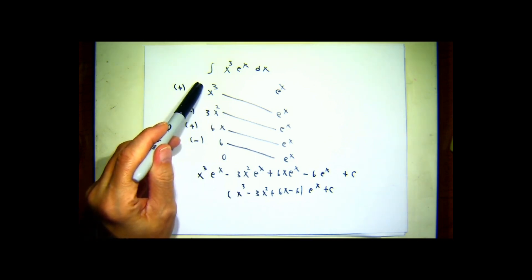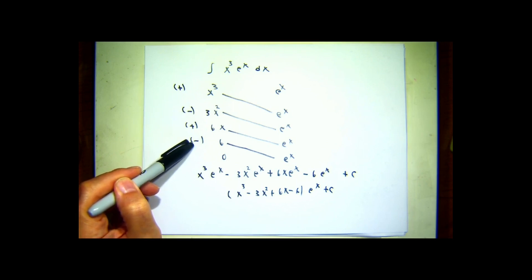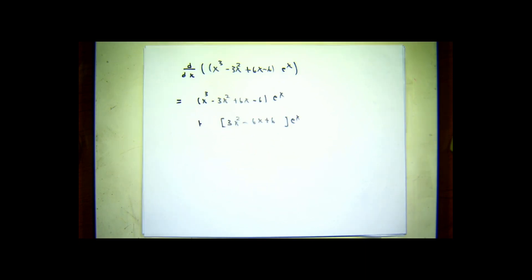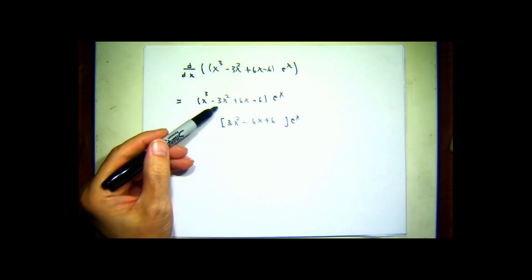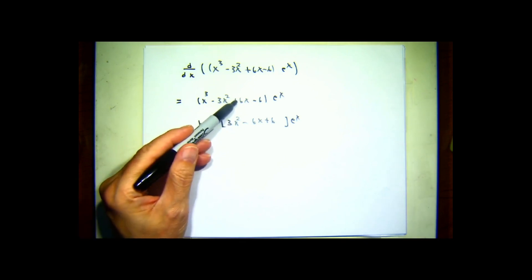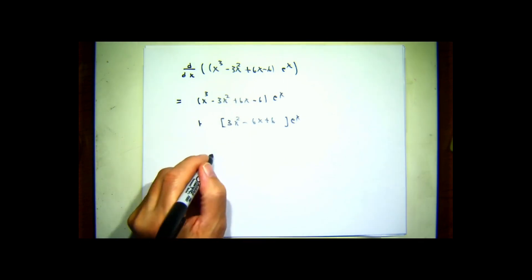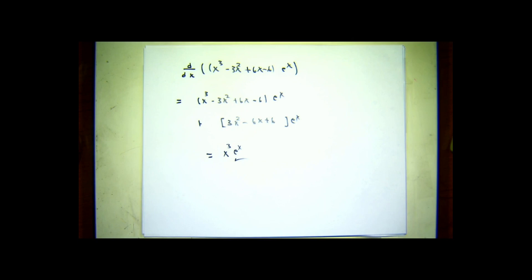x cubed e to the x, minus 3x squared e to the x, plus 6x e to the x, minus 6 e to the x, plus a constant. In the terms that are not constants, I can factor out e to the x. Allegedly, the derivative of this is x cubed e to the x. Doing the product rule, notice that there's an e to the x in both pieces, so I can think of factoring that out. Minus 3x squared plus 3x squared cancels out. 6x plus negative 6x cancels out. Negative 6 plus 6 cancels out. And the only thing that remains is x cubed e to the x, just like it's supposed to be.